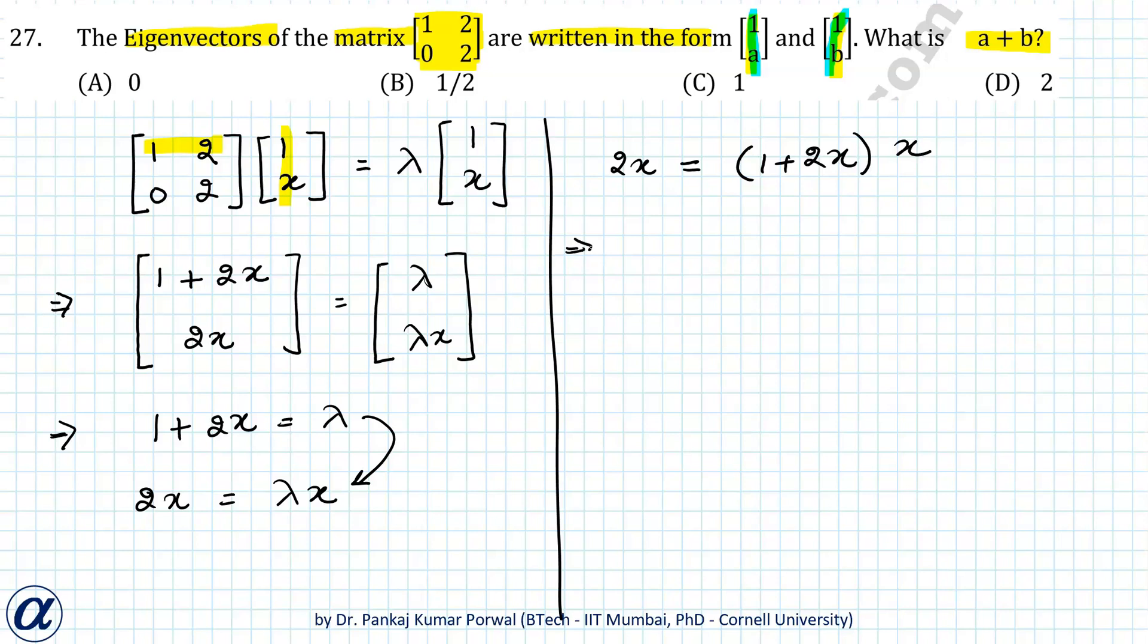This gives me 2x equals x plus 2x squared. Moving all terms to one side, I get 2x squared minus x equals 0.